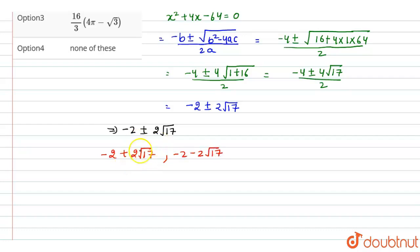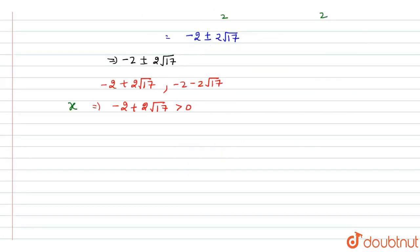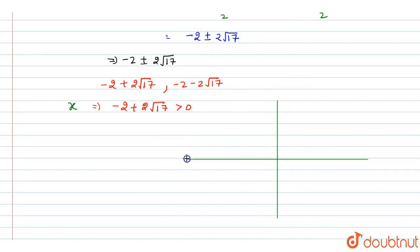We use the positive root x = −2 + 2√17, because the x-coordinate must be greater than 0. The negative root x = −2 − 2√17 is rejected. So the x-coordinate of point P (the intersection) is −2 + 2√17. Now we draw the circle and the parabola in the coordinate system.